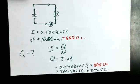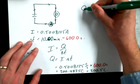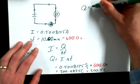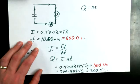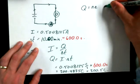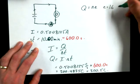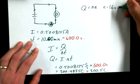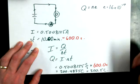Now that we know how many coulombs of charge went through this light bulb, could we calculate how many electrons that represents? We came up with the formula Q equals NE, where E has the value of 1.6 times 10 to the power of negative 19.